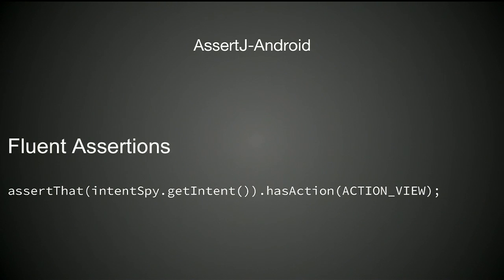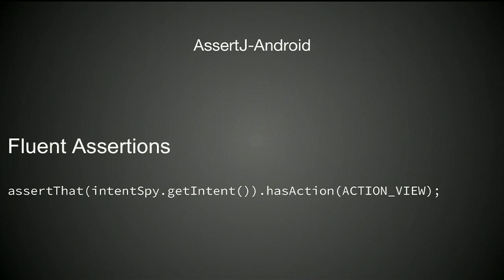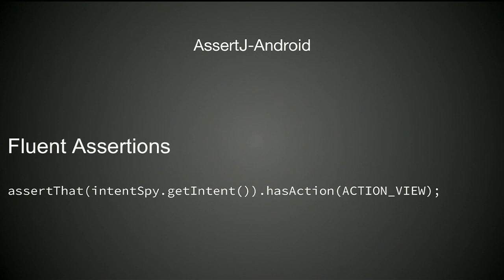One last thing: if you have WireMock with a fluent API and Espresso operating on your UI with a fluent API, there's one more tool that continues that theme — AssertJ Android. It's built on top of AssertJ, which gives you a fluent API for asserting things at the end of your test, with support for all sorts of Android APIs. For instance, you can use it with IntentSpy to assert that the intent has the action VIEW, making sure the right intent was issued.